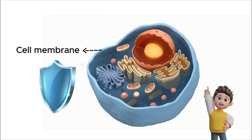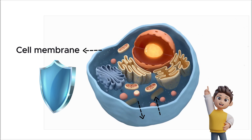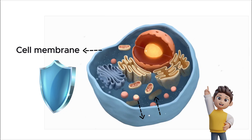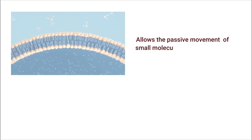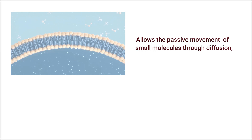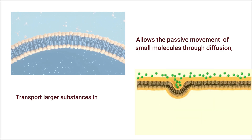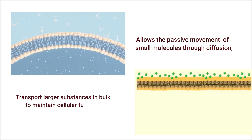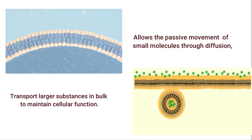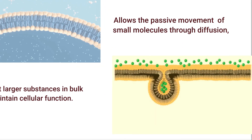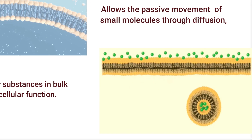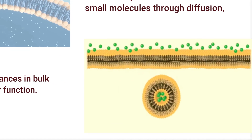One of its primary functions is transporting materials according to the cell's needs. Sometimes the plasma membrane allows the passive movement of small molecules through diffusion, while at other times it must transport larger substances in bulk to maintain cellular function. This bulk transport is a highly specialized process that ensures the cell's internal environment remains stable and supports its efficiency.